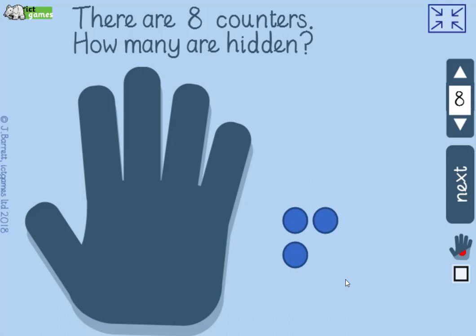This is Handy Counters, and it's a replacement for having magnets on the board and covering some of them up with your hand. You're working on your math facts up to 12.